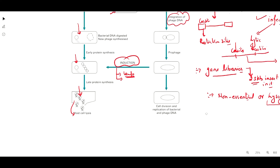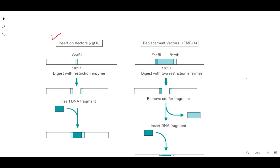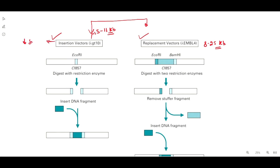Let's talk about examples of lambda phage vectors. Lambda phage vectors are of two types: insertion vectors and replacement vectors. Lambda insertion vectors can carry up to 5 to 11 kilobase pair inserts, while replacement vectors can carry 8 to 24 kilobase pair inserts. So the key difference is the size of insert capacity — insertion vectors carry smaller DNA fragments, and replacement vectors carry larger DNA fragments.